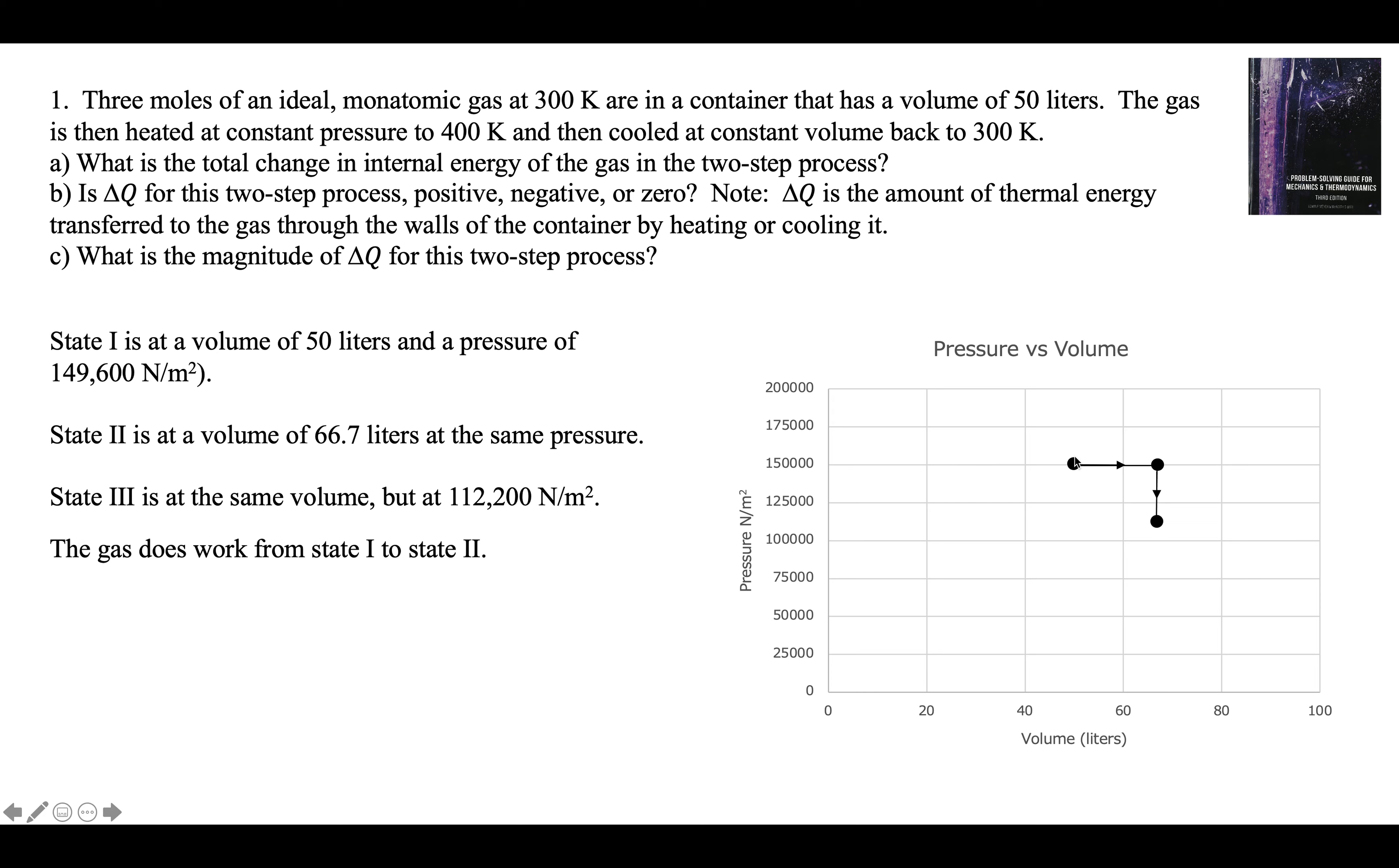Gas does work from here to here. It's pushing on the piston, and the piston's moving back. There's a force against the piston. The piston is moving in the direction of the force. That's positive work, and it's simply pressure times change in volume. The change in volume is 16.67 liters, 0.0167 cubic meters, which is 2490 joules.